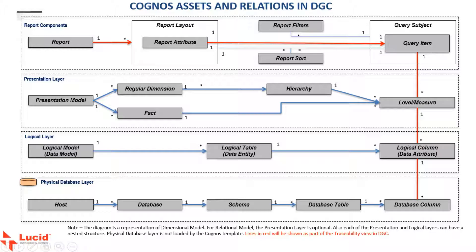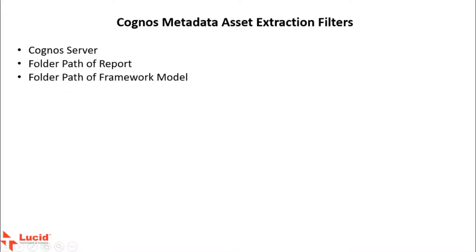Finally, the relation of these assets to the physical layer has data elements such as tables, views, and columns. The red line represents the column-level lineage from the report attributes in a report to the dimensions and measures, and finally to the underlying data sources. The template provides options to filter the metadata extraction based on a Cognos server folder path of Cognos reports.